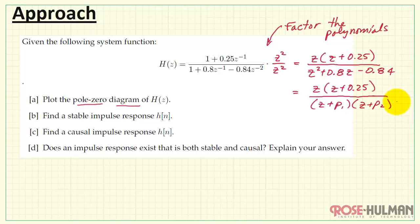We then need to factor the denominator. We would have two factors we're looking for. And then we can identify the zeros from the numerator and the poles from the denominator.